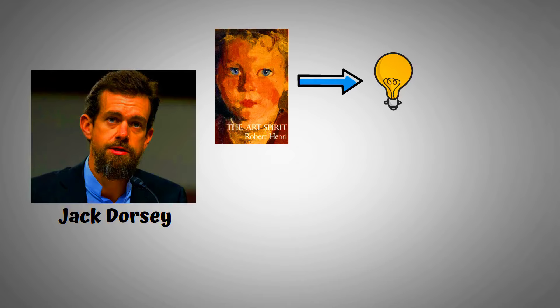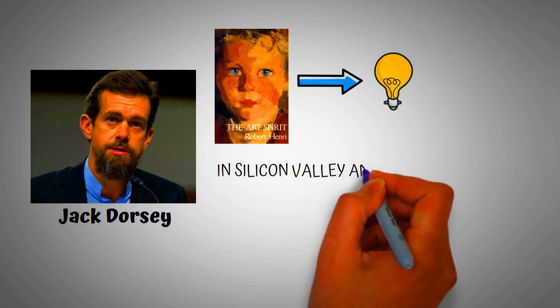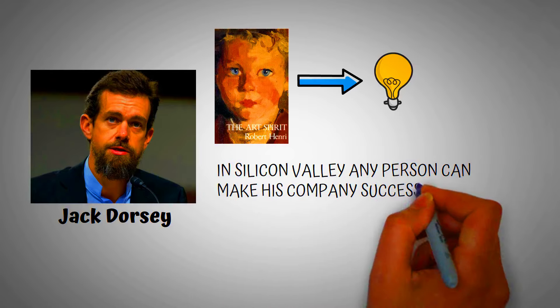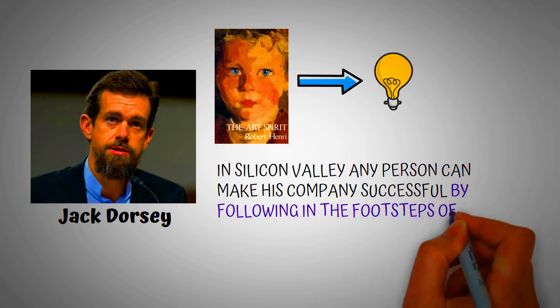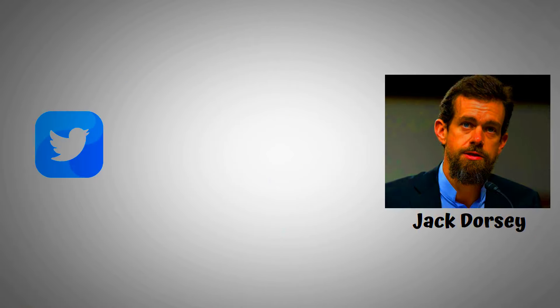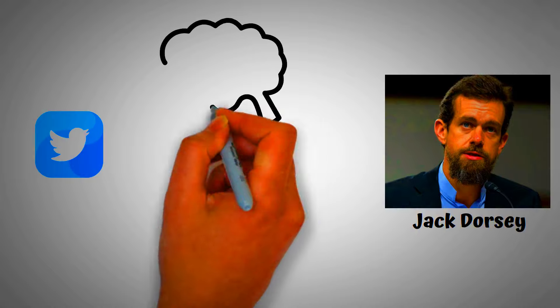While giving a speech at a start-up event in 2013, Dorsey said that in Silicon Valley any person can make his company successful by following in the footsteps of another company, but to create a different company like Twitter, it is important to think out of the box.